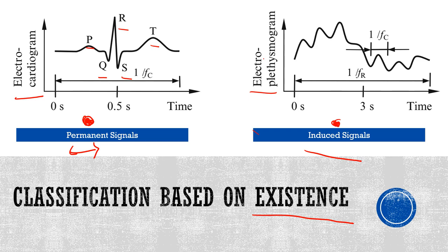In the electroplethysmogram, a voltage along the current path reflects the tissue impedance changes. As we push in the electric current, the impedance changes, and the voltage is registered as an induced biosignal. As you know, voltage is current multiplied by resistance — so based on the current, the resistance changes, and based on that we generate a voltage which is recorded over time, allowing us to ascertain the impedance of the tissue.